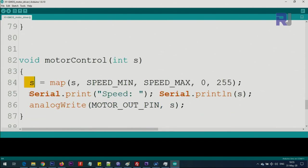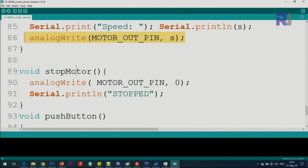This is just printing it, but this line, analogWrite motor out pin, we send the value, whatever it is between 0 to 255, to Arduino function to send the signal to pin 3 to control the motor. Stop motor is exactly the same except here in this line we set 0, but here we send the calculated value.